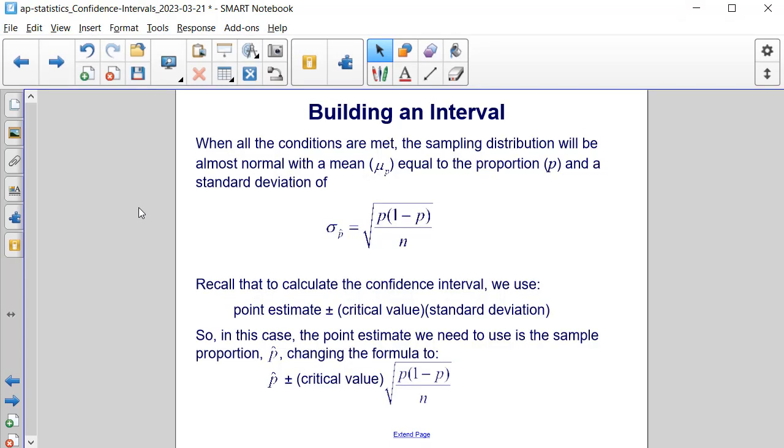When all the conditions are met, the sampling distribution will be almost normal with the mean μ_p equal to the proportion p and the standard deviation of the square root of p times the quantity 1 minus p, all divided by n, still inside the square root.